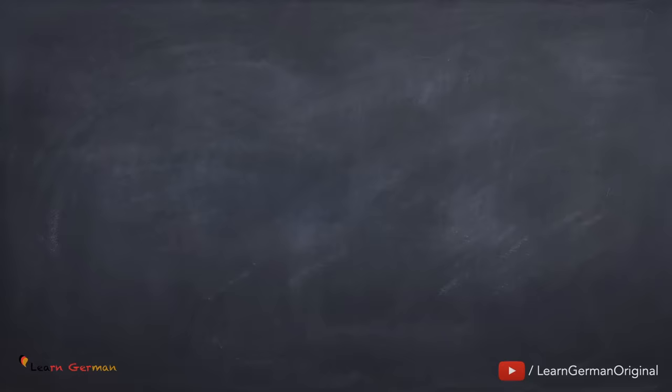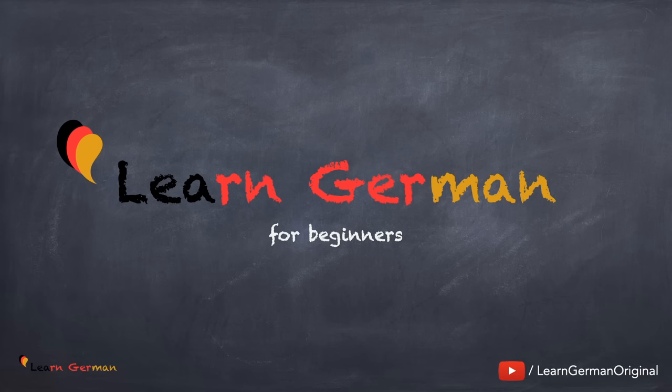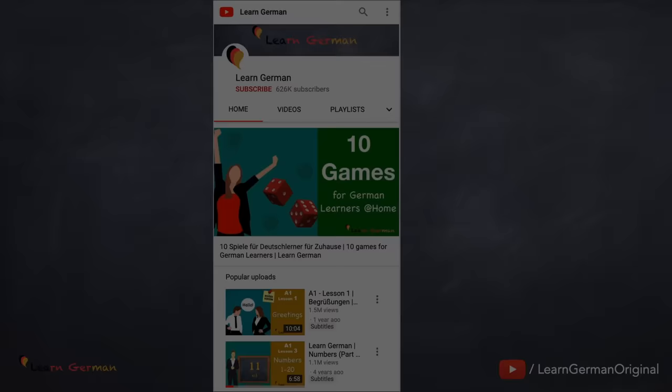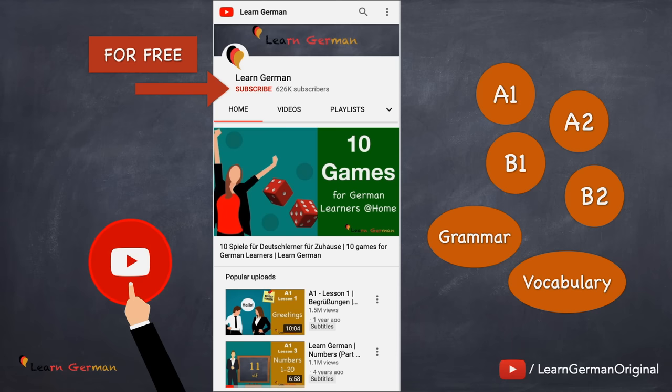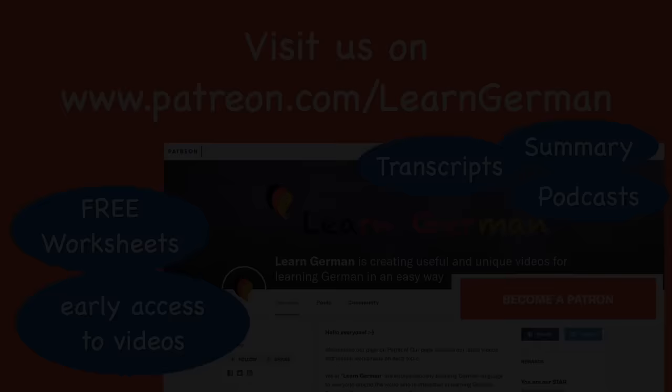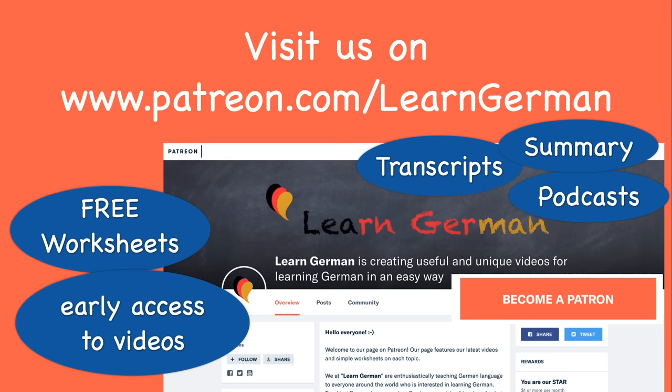Hello everyone and welcome to our video series on Learn German for Beginners. We will be learning about the three definite articles in German. Don't forget to subscribe to our channel for learning German for free and in the easiest way. We offer structured courses for A1, A2, B1 and B2, and a variety of topics from grammar and vocabulary to common mistakes one can make in German. You can also visit our page on patreon.com to get free worksheets, transcripts, early access to our videos and more. You can find the links below in the description.